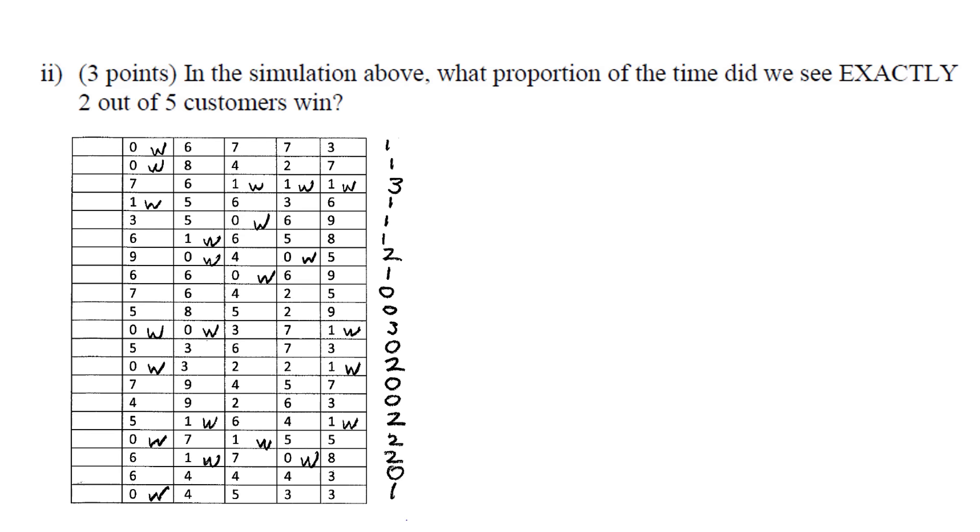In the simulation above, what proportion of the time did exactly 2 out of the 5 customers win? And when it comes to questions like this, you have to be careful. Make sure to mark exactly who won and who lost. And if you did this, you'll see that in your simulation, exactly 5 times 2 out of 5 customers won. And this is 5 out of 20 times. We are looking for the proportion of times that exactly 2 customers won. So the answer is 25%.